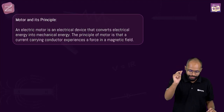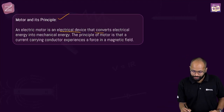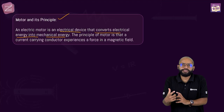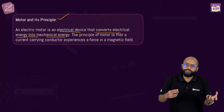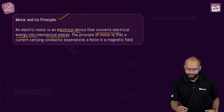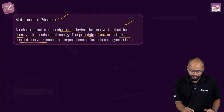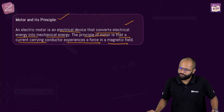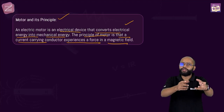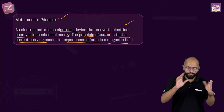Motor and its principle — how will you write this? Electric motor: an electrical device that converts electrical energy into mechanical energy. What does a motor do? You give it electricity, it gives you mechanical energy — conversion of electrical energy into mechanical energy. The principle of motor: a current-carrying conductor experiences a force in a magnetic field. Simple. Device converting electrical to mechanical energy; force on a current-carrying conductor in a magnetic field.